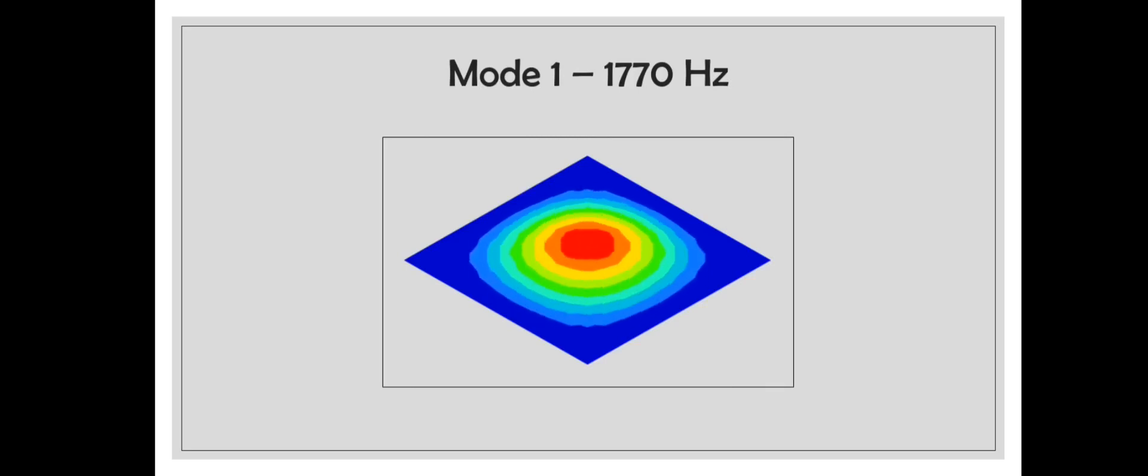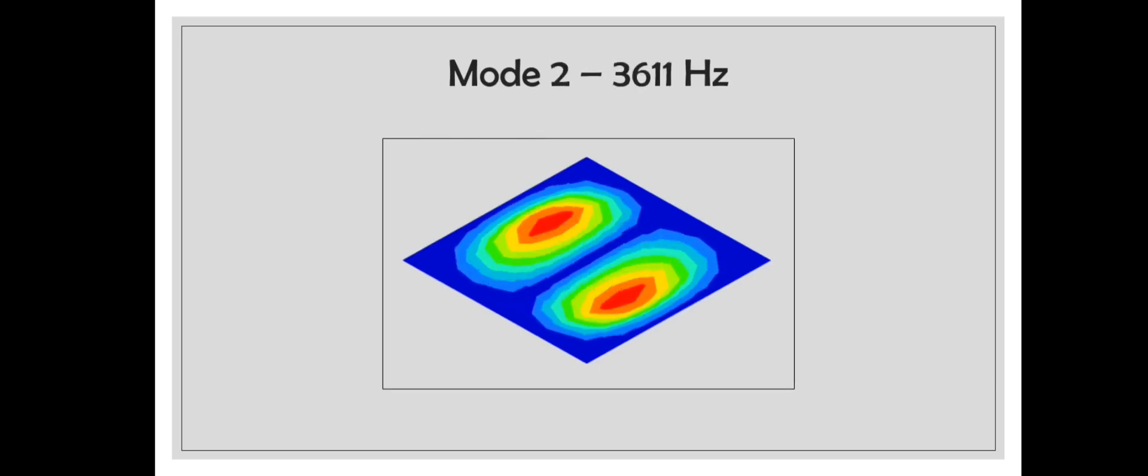This is the second mode shape. As you can observe, the edges have no motion at all. This is the third mode shape.